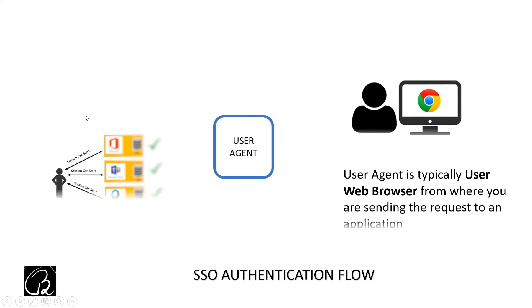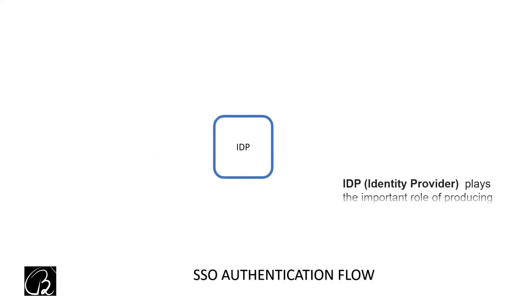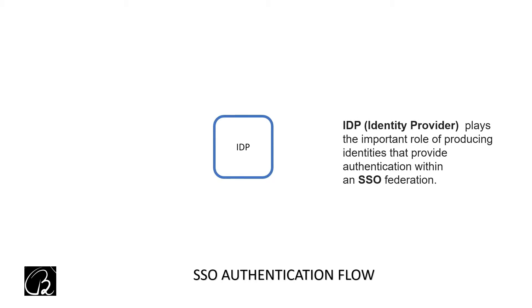The next one is IDP — the most important part in SSO authentication flow. IDP stands for Identity Provider. By looking at the name you can understand what it does: it plays the important role of producing identity. The doubt from before was where should I log in once — the answer is in IDP. You log in one time in IDP, and IDP will provide your identity to all the applications you want to access.